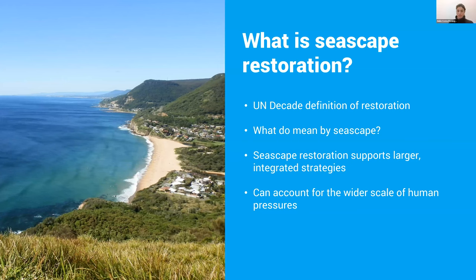So what is seascape restoration? In this project, we adopted the UN Decade on Ecosystem Restoration definition: restoration is the process of halting and reversing degradation, resulting in improved ecosystem services and recovered biodiversity. This can include active restoration actions such as planting mangrove seedlings, or more passive restoration actions such as area-based management tools like marine protected areas. As for 'seascape,' there is no formal definition — the term is derived from landscape and describes a complex marine area of different interacting species and ecosystems shaped by dynamic and interconnected processes operating at different scales.